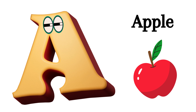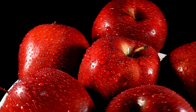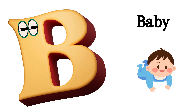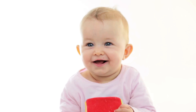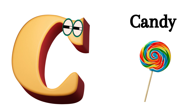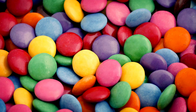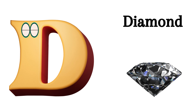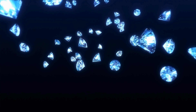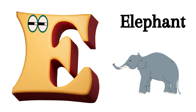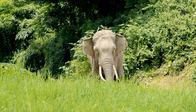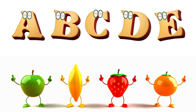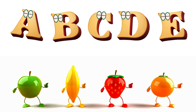A is for Apple. A, A, Apple. B is for Baby. B, B, Baby. C is for Candy. C, C, Candy. D is for Diamond. D, D, Diamond. E is for Elephant. E, E, Elephant.